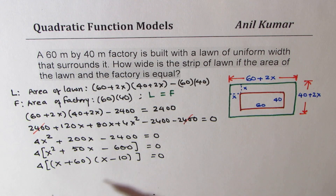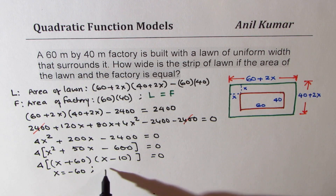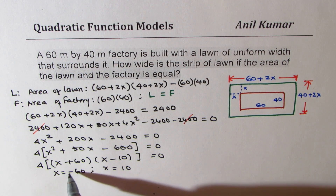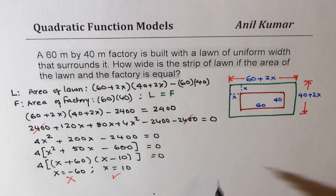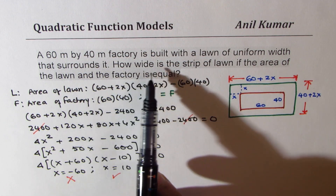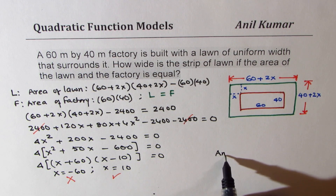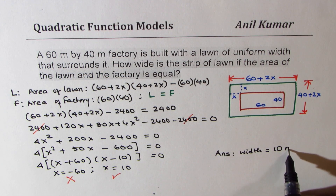For that to equal 0, x should be either minus 60 or x equals 10. Clearly, minus 60 is not possible since width can't be negative. So x equals 10 gives us the result for the condition. We can now write down that the width of the strip should be 10 meters. Our answer is width equals 10 meters.